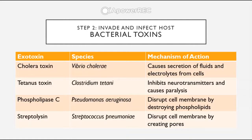There are four exotoxins you should be aware of. First is cholera toxin from Vibrio cholerae, which causes secretion of fluids and electrolytes from cells. Next is tetanus toxin from Clostridium tetani, which inhibits neurotransmitters and causes paralysis. Then phospholipase C from Pseudomonas aeruginosa, which disrupts cell membranes by destroying phospholipids. Finally, streptolysin from Streptococcus pneumoniae disrupts cell membranes by creating pores.